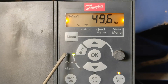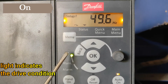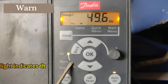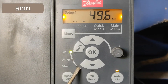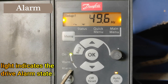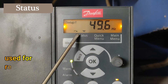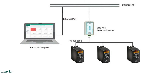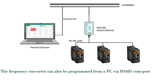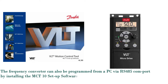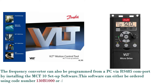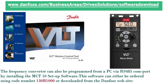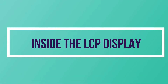Indicator lights: On indicator light indicates drive condition; Warn indicator light indicates drive warning states; Alarm indicator light indicates drive alarm states. Status is used for readouts only. Quick menu is used for access to quick menus 1 and 2. The frequency converter can also be programmed from a PC via RS-485 COM port by installing MCT-10 setup software, which can be ordered using code number 130B1000 or downloaded from the Danfoss website.